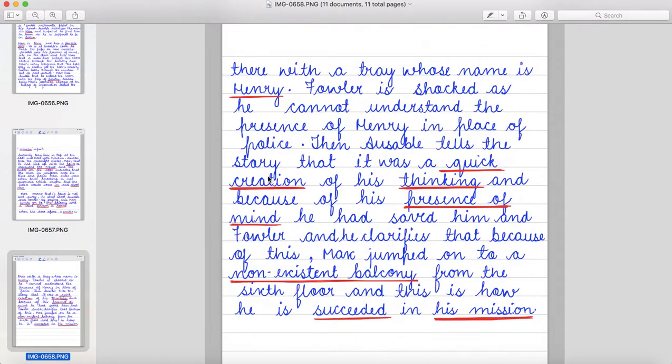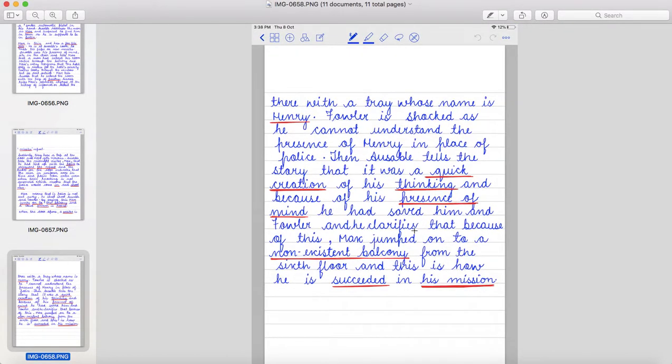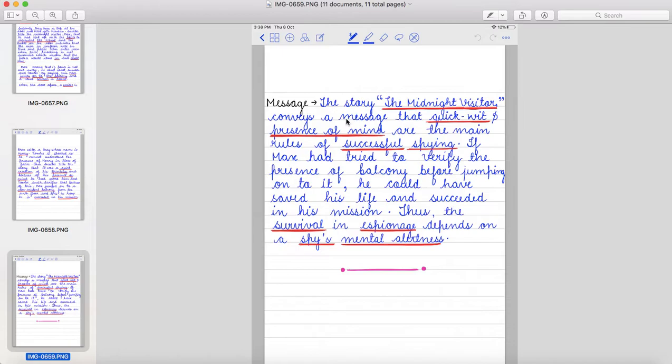And police can enter even when their knocking is not answered which means that the police would come in and shoot Max. Max warns if police is not sent away, he shall shoot Ausable and Fowler. By saying this, Max jumps onto the balcony and a loud scream is heard. When the door opens, a waiter is there with a tray whose name is Henry.